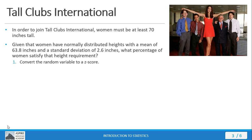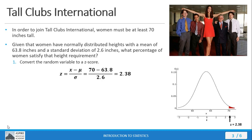First, we convert the random variable to a z-score using the standard z-score equation. We find that the z-score for 70 inches is 2.38. On our normal distribution diagram, 2.38 falls to the right of center. The shaded region to the right of 2.38 represents the probability that someone will actually be able to join Tall Clubs International — the area to the right, with the z-score as the left boundary.